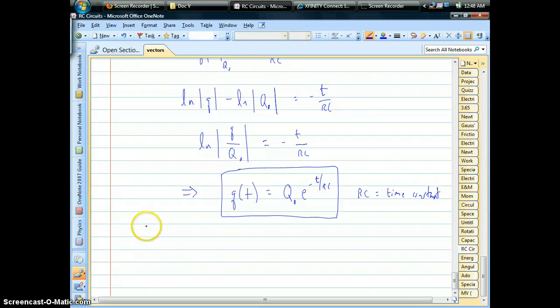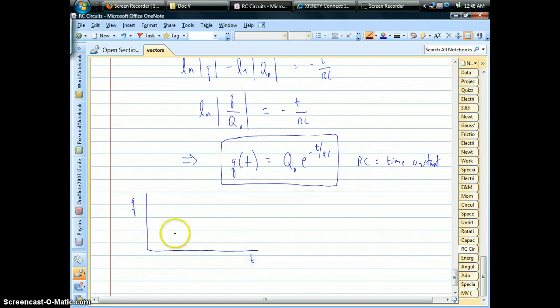If you were to graph this, the charge of your capacitor as a function of time, when you plug in time equals zero, it starts off at an initial charge, which is good. That's our initial condition. If time gets big, our charge approaches zero exponentially.